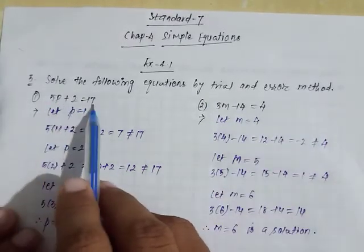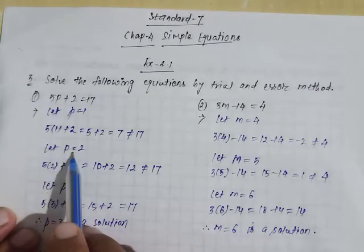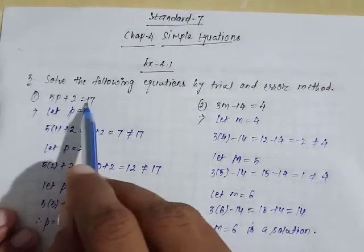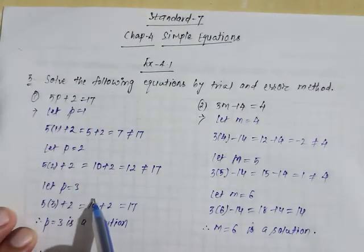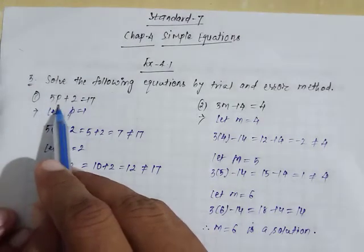Solve the following equations by trial and error method. Whatever equations you see, one by one we will substitute numbers. And whatever value comes, we will check whether the last answer is 17 or not. If we have 17, whatever value you substituted will be your answer.